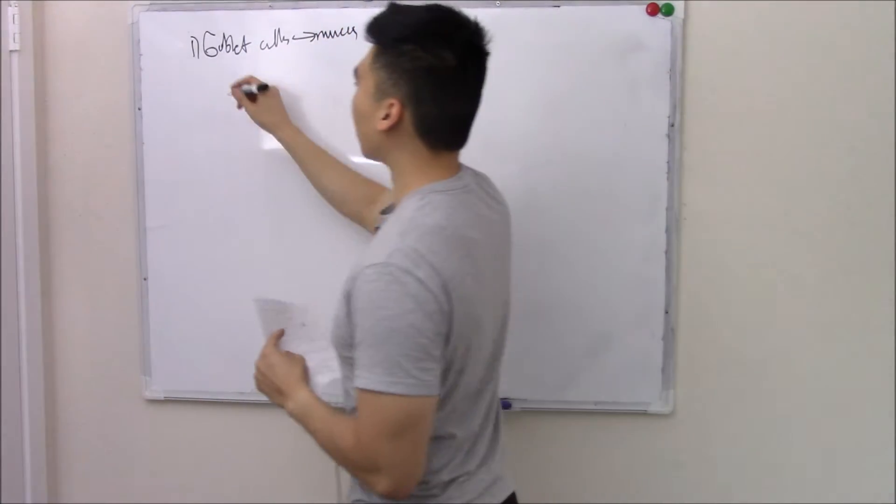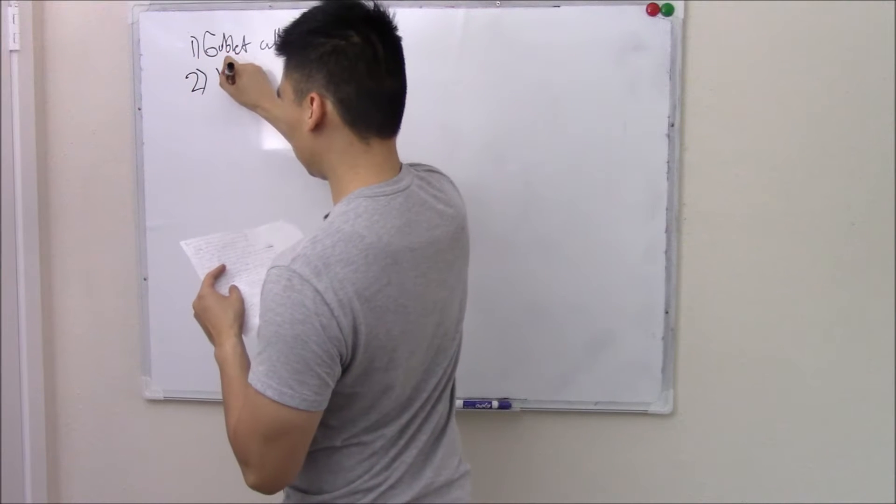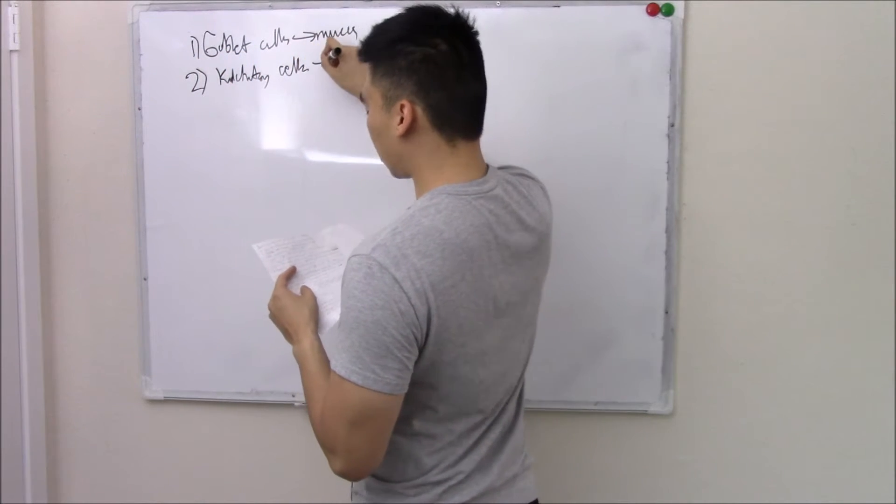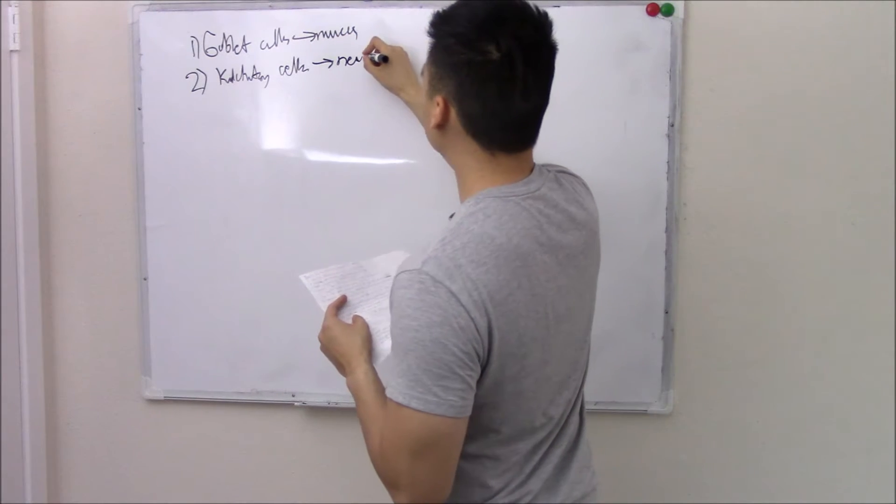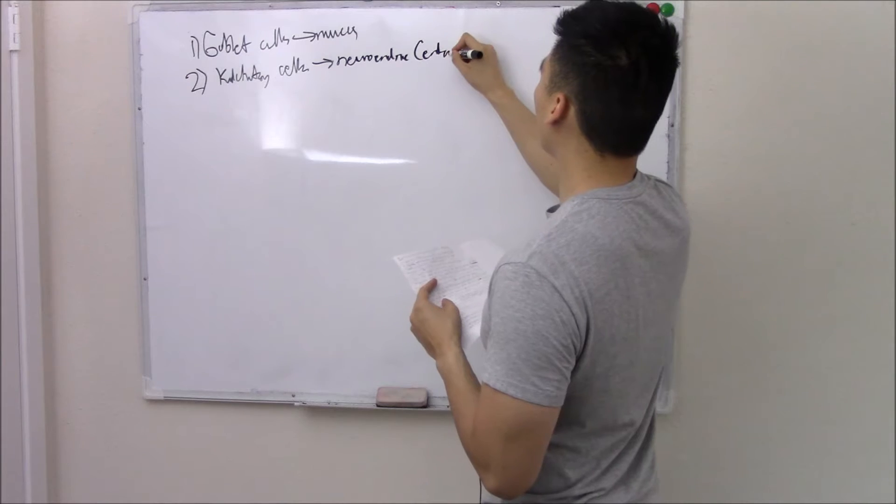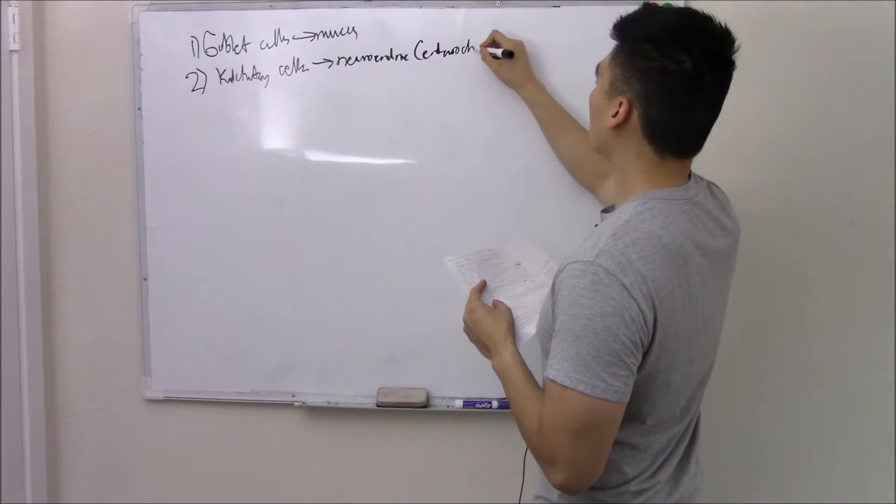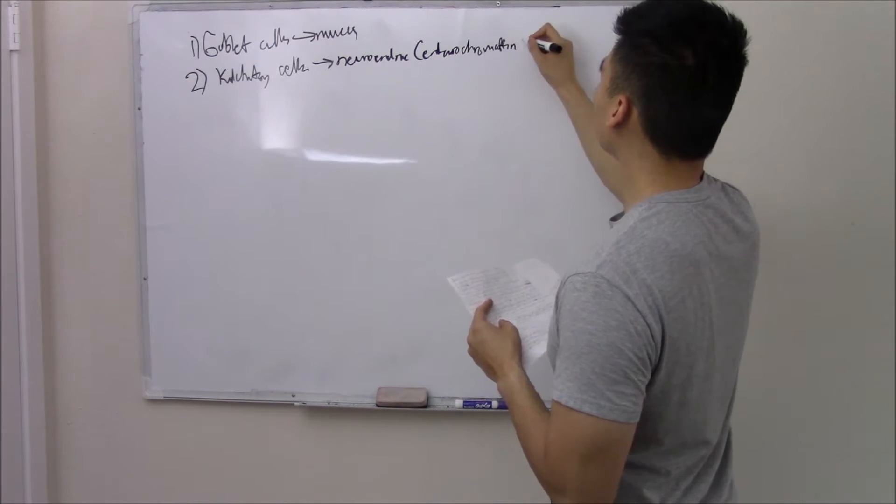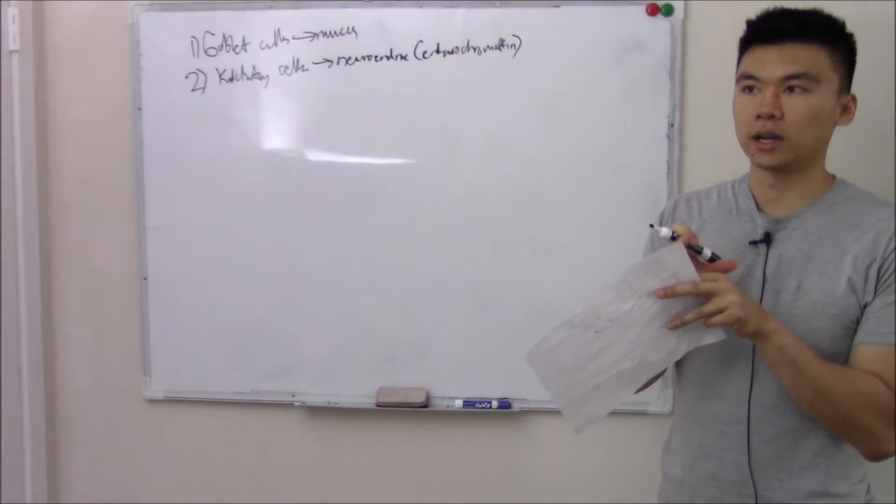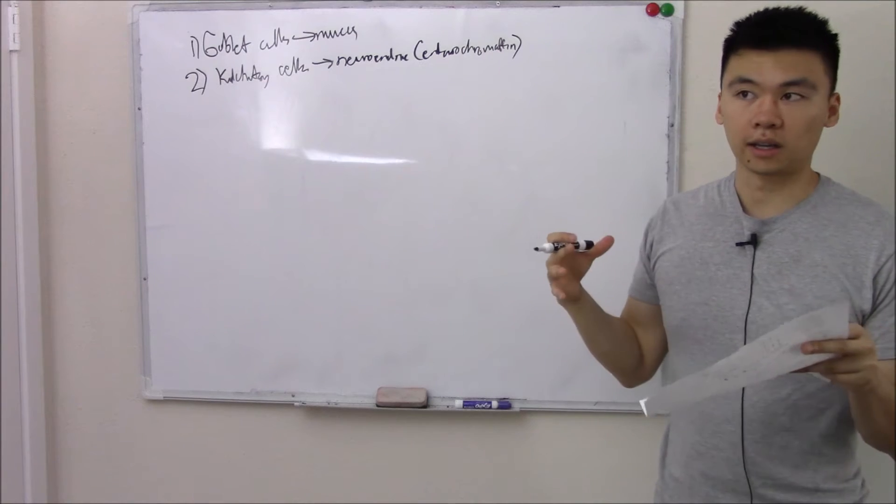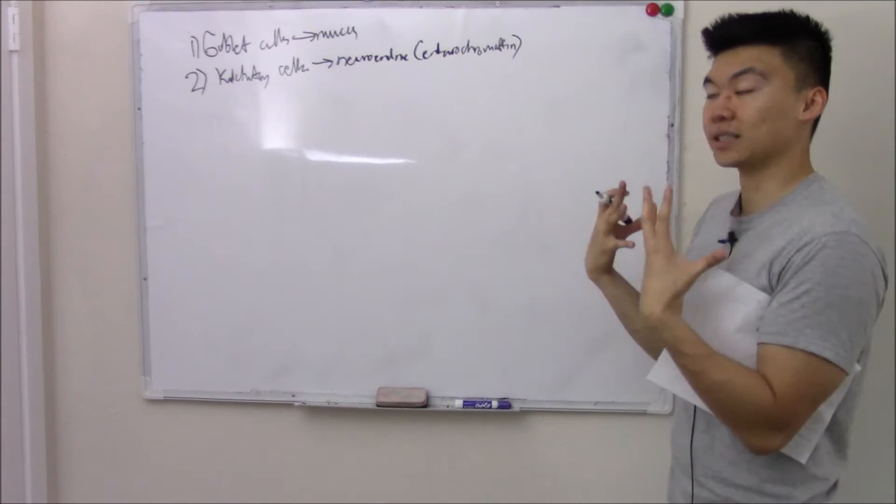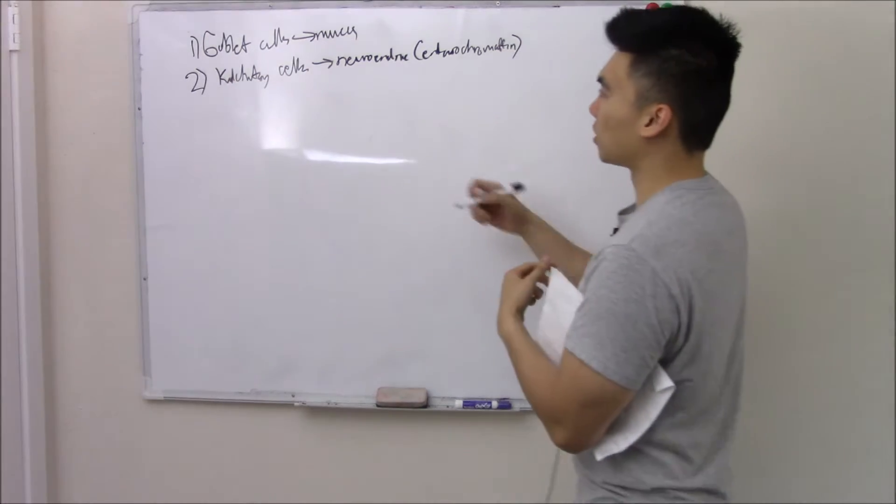Some other cells you should be aware of are Kulchitski cells. Kulchitski cells are these neuroendocrine cells, sometimes referred to as enterochromaffin. These neuroendocrine cells are important because they help regulate our airway tone and vascular tone. This is important because we don't consciously think of our airway tone, it kind of does it on its own.